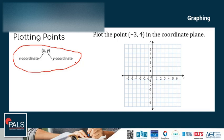Plotting these points is really just about reading the ordered pair correctly. Starting from the origin, where the point is (0, 0), the x-coordinate gives the distance left or right — negative means left. And the y-coordinate gives the distance up or down — negative means down.